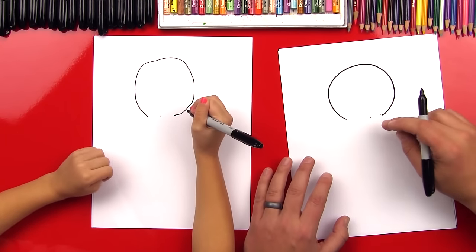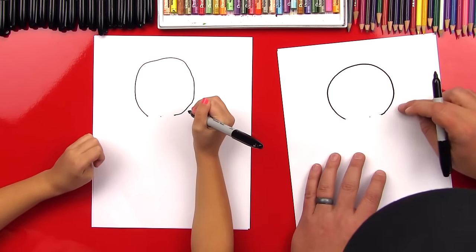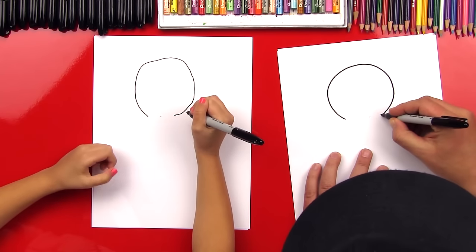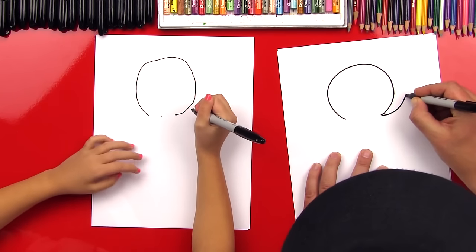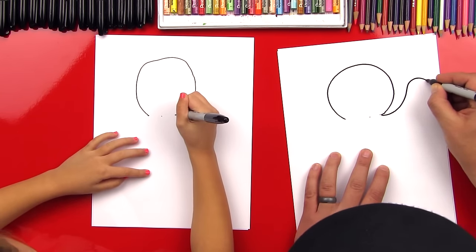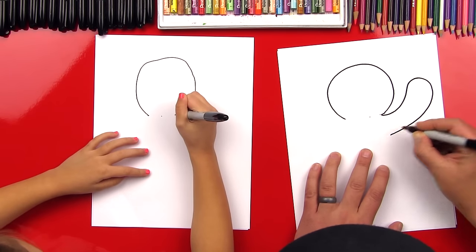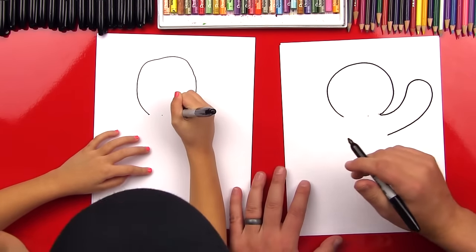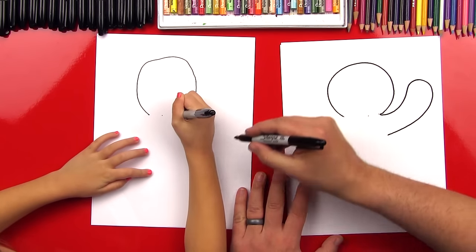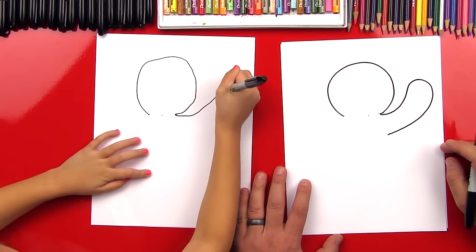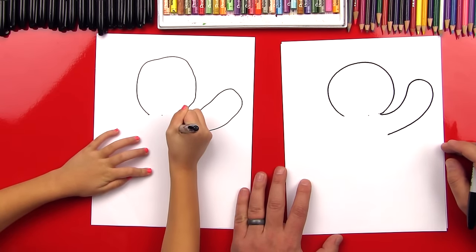Okay, now we need to draw his arm and we're gonna go up here like he's waving, so we're gonna come up, come up and then back around like a big hot dog. So come up and then around and back to his body. Yeah, good job Hads.